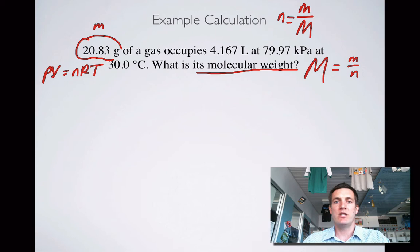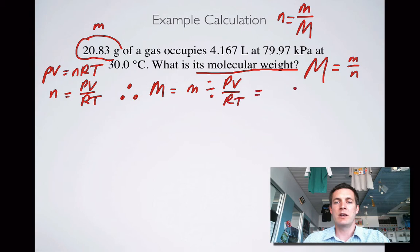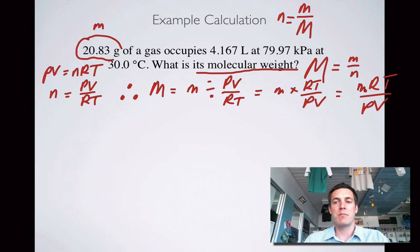If I rearrange this I can actually see that n is equal to PV over RT. And if big M is equal to m divided by n, then therefore big M equals m divided by PV over RT, which is the same thing as m multiplied by RT over PV, or in other words, mRT over PV. So if I know the pressure and volume of a gas and its temperature and its mass, I'll be able to find its molar mass.